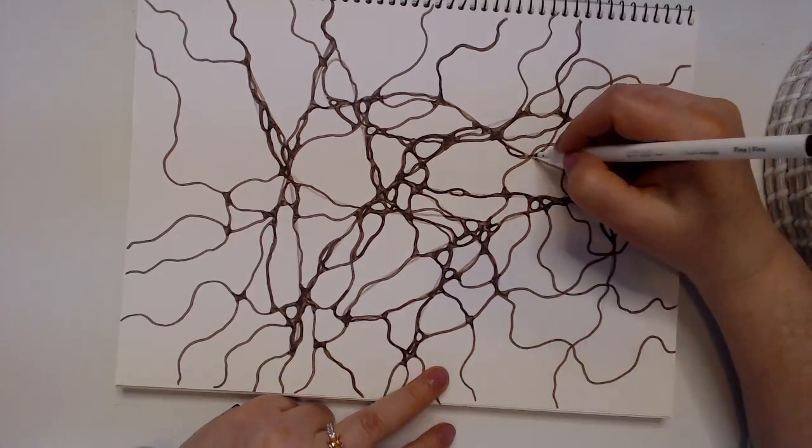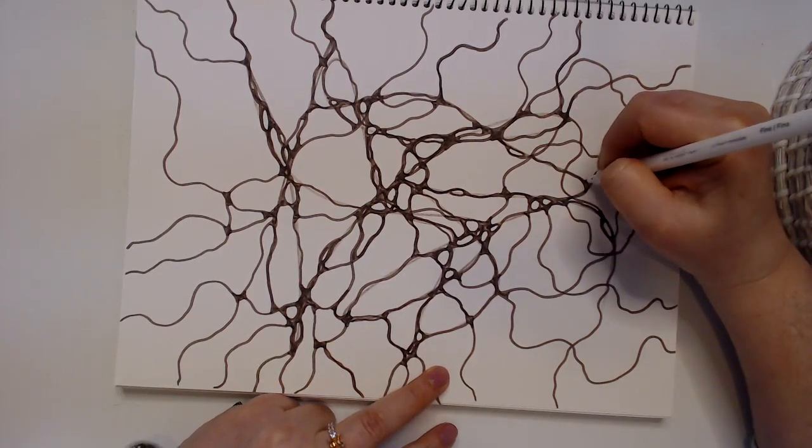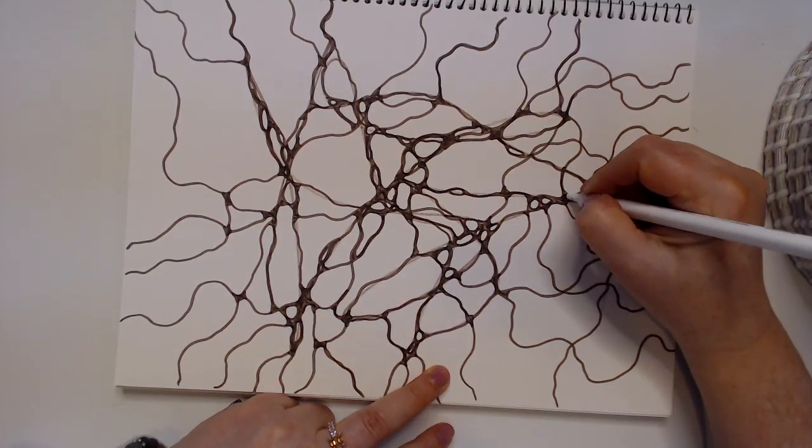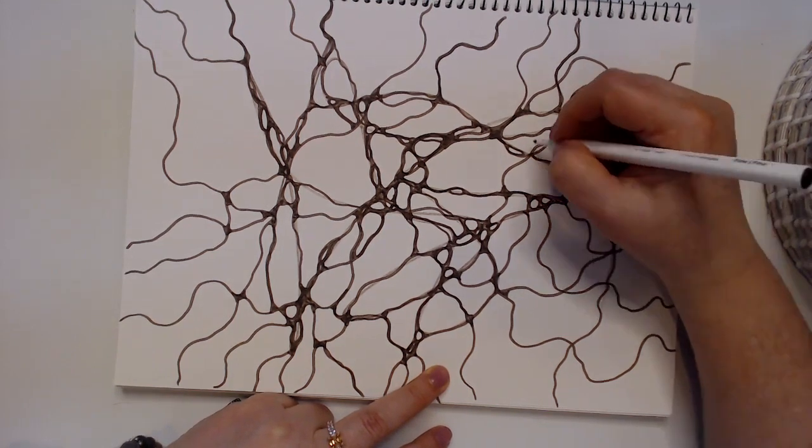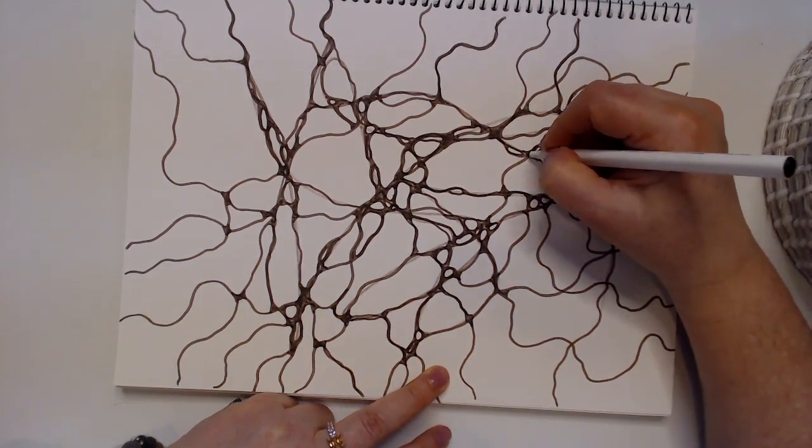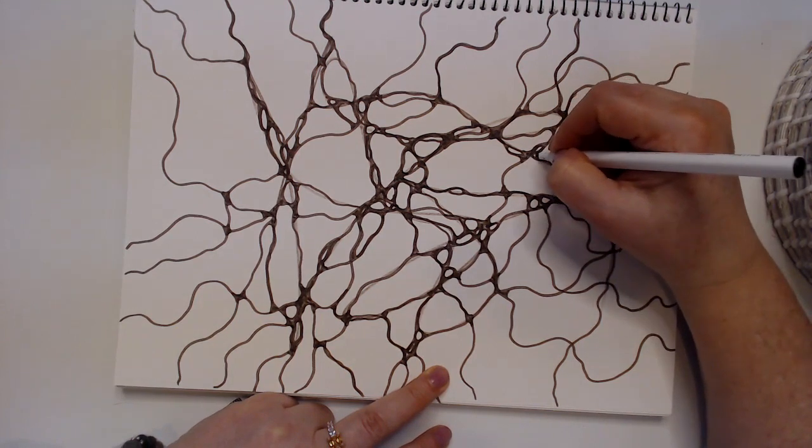So then you could just thicken them and continue rounding, continue. You know, sometimes people think neurographica takes too much time, and they give up.